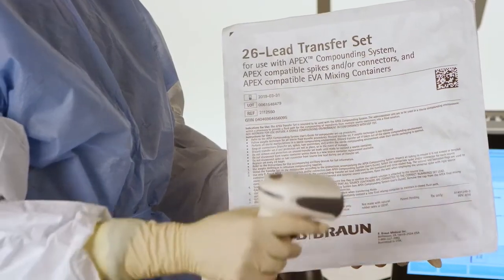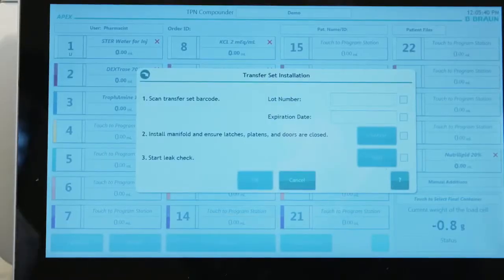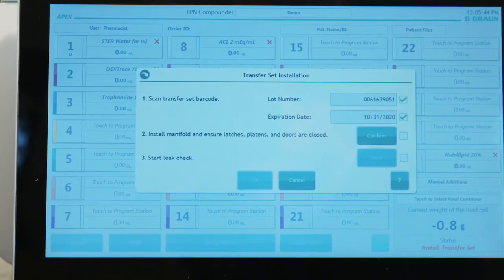Using the barcode scanner, scan the label on the transfer set package. APEX will populate the lot number and expiration date in the appropriate entry fields and add green check marks to the right.